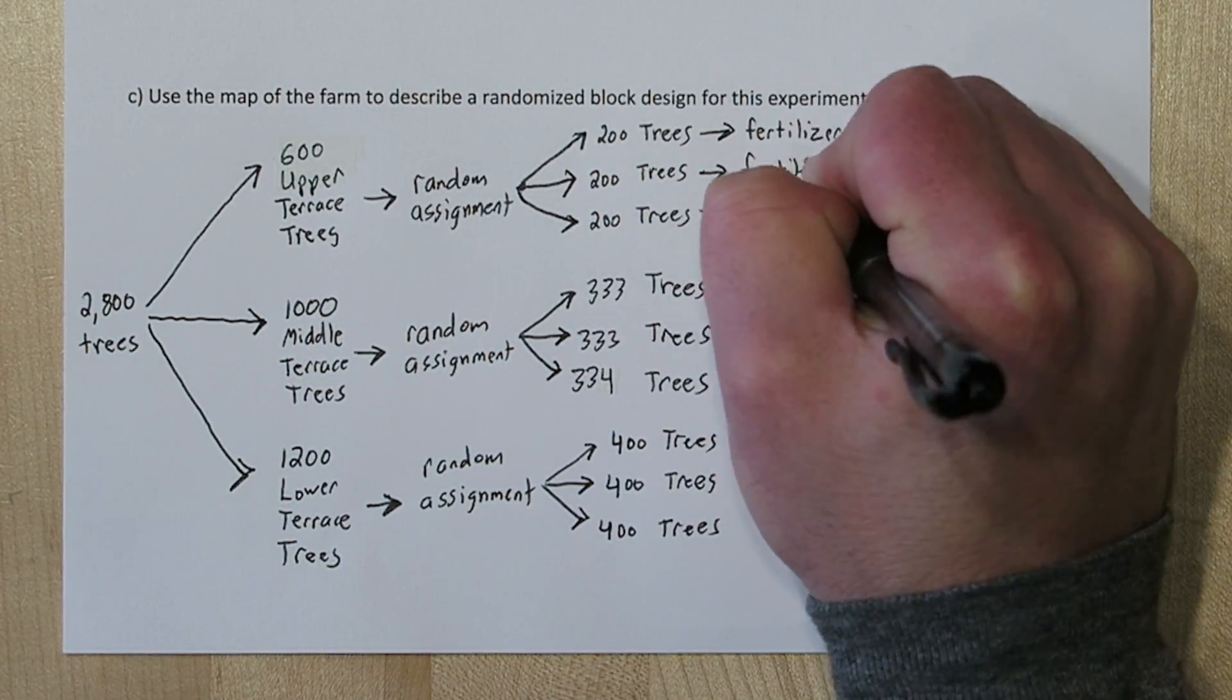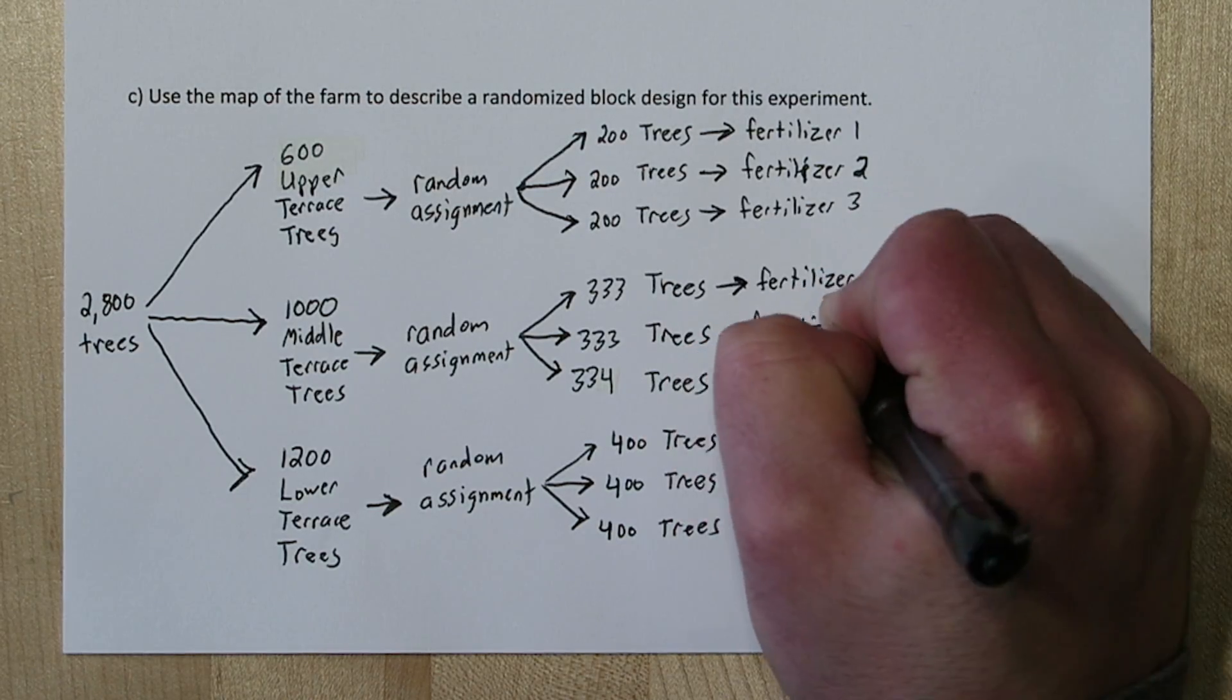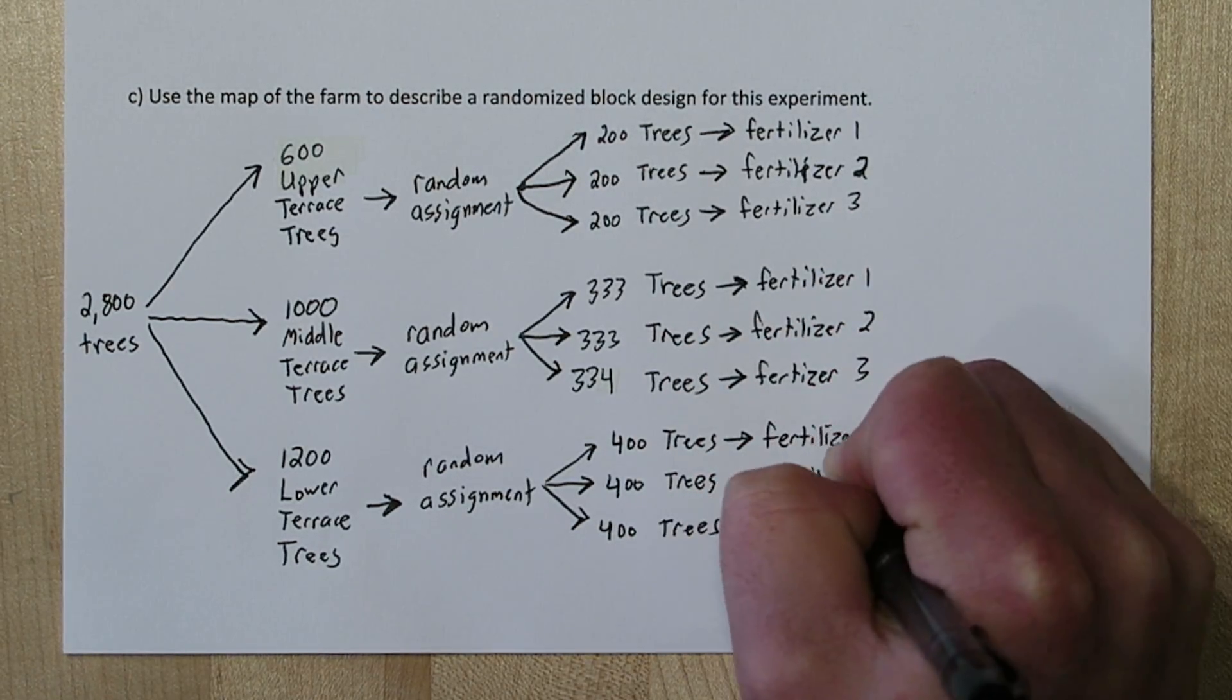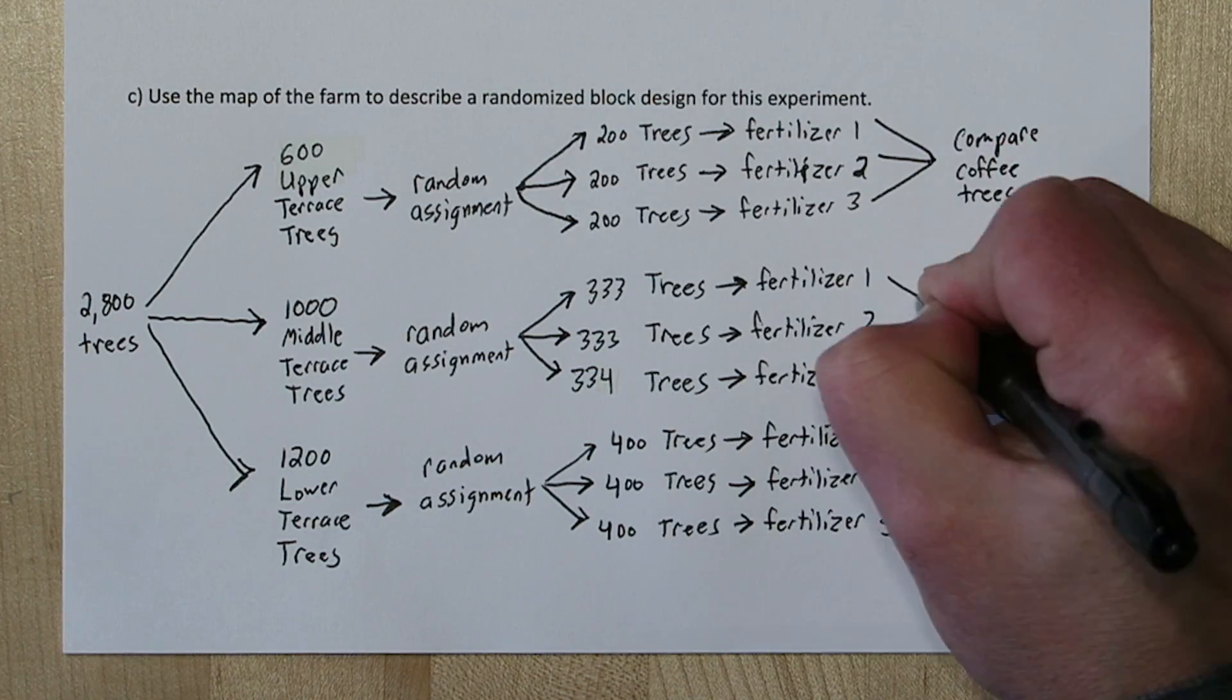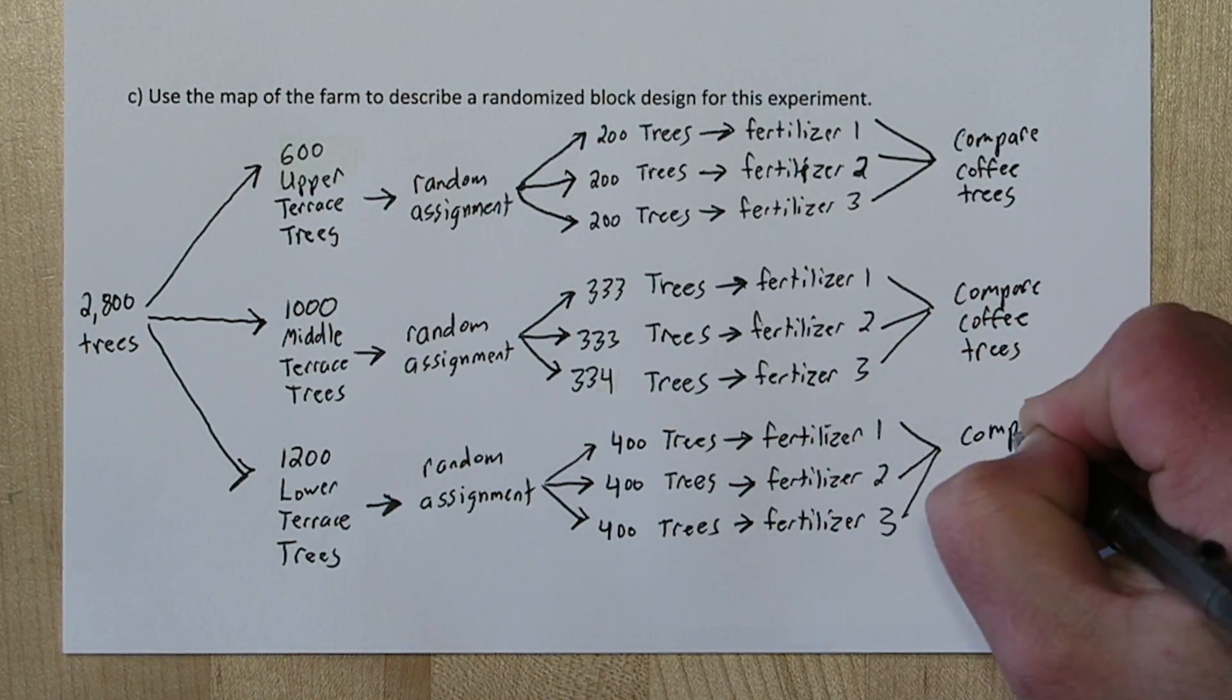Now, for each block, assign one of the fertilizers to each of the three groups of trees. And finally, for each block, compare the effects of the different fertilizers on the coffee trees.